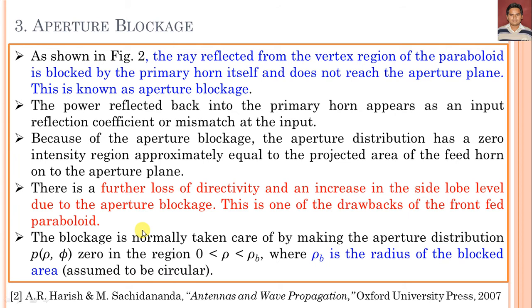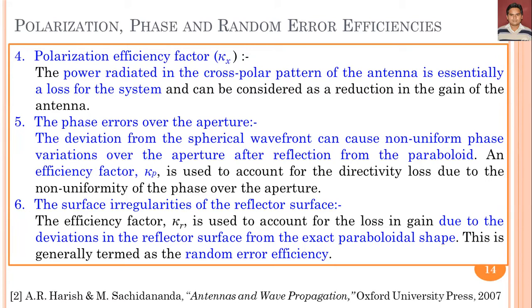The fourth parameter is polarization efficiency factor, represented by κ_X. Power radiated in the cross-polar pattern of the antenna represents a loss of the system, reducing the antenna gain. If the antenna is vertically polarized, the horizontally polarized component is the cross-polar component. Similarly, for a left-hand circularly polarized (LHCP) antenna, the cross-polar component is the right-hand circularly polarized (RHCP) component.